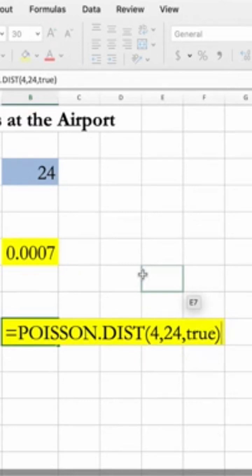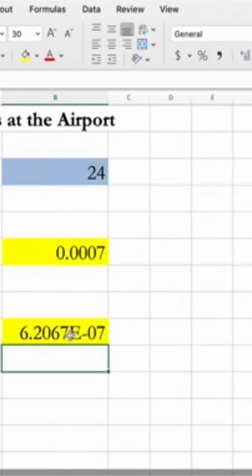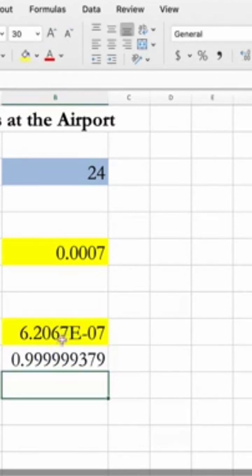The true statement basically tells you the area under the curve all the way until four. Once you find this value, you're going to deduct it from one because the area under the curve is equal to one. So one minus the answer you found equals 0.99.